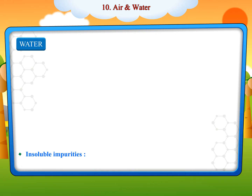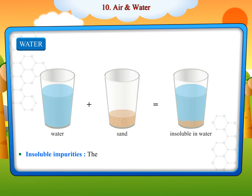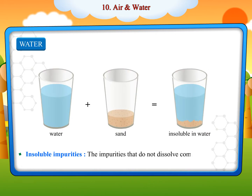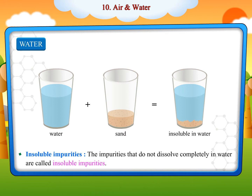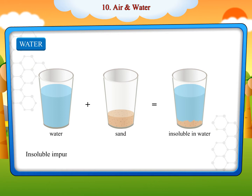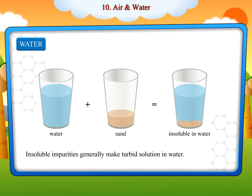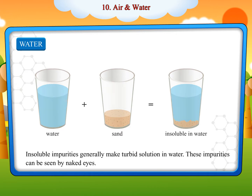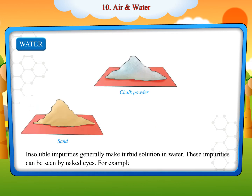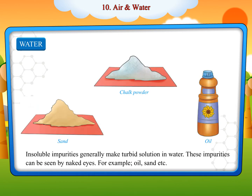Insoluble impurities are impurities that do not dissolve completely in water. Insoluble impurities generally make a turbid solution in water. These impurities can be seen by the naked eye. For example, oil, sand etc.